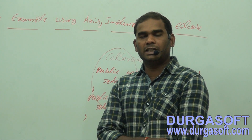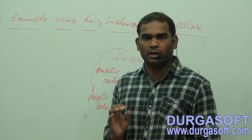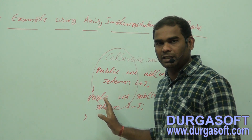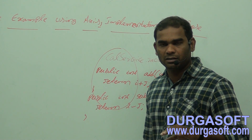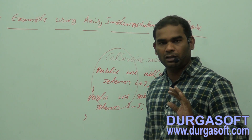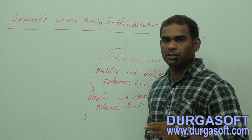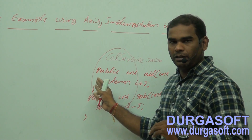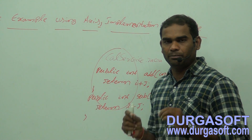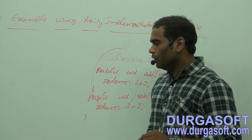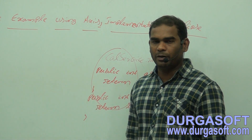This is the web service class. As we discussed in earlier videos, a web service is a normal POJO class. CalService is a POJO class — meaning it doesn't implement or extend any third-party interface or vendor implementation class, and we are not using any third-party classes inside our class. It is a plain Java class.